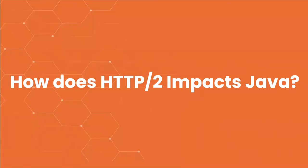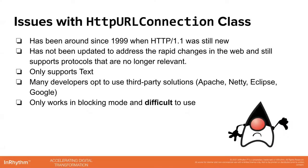So how does HTTP 2 impact Java? Before we go into that, let's go over some history. The class and client that came with the JDK — the Java Developer Kit — was this HTTPURLConnection class. It came with Java since the late 90s, which is when the internet started, and it was designed around the HTTP 1.1 protocol. What happened is that this client has not been updated.